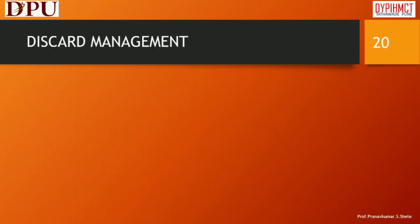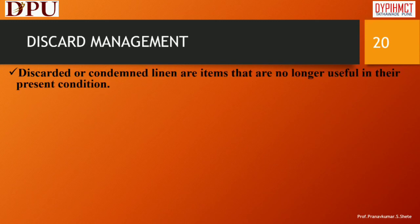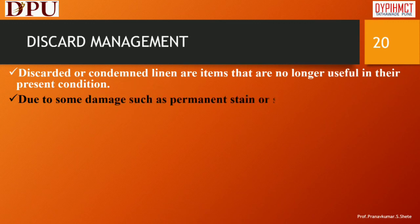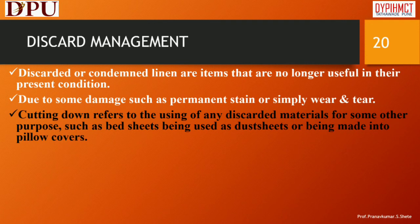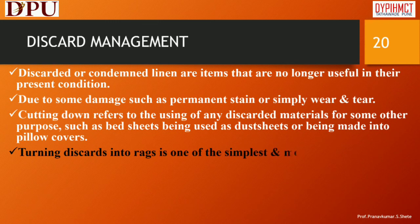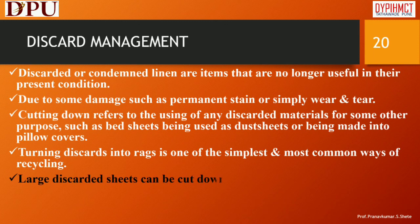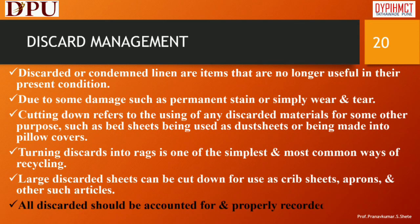Discard management: Discarded or condemned linen are items that are no longer useful in their present condition due to damage such as permanent stains or simply wear and tear. Cutting down refers to using discarded materials for another purpose, such as bed sheets being used as dust sheets or made into pillow covers. Turning discards into rags is one of the simplest and most common ways of recycling. Large discarded sheets can be cut down for use as crib sheets, aprons, and other such articles. All discards should be accounted for and properly recorded.